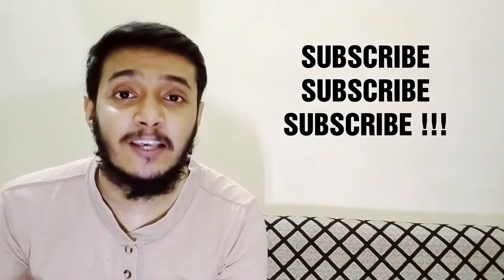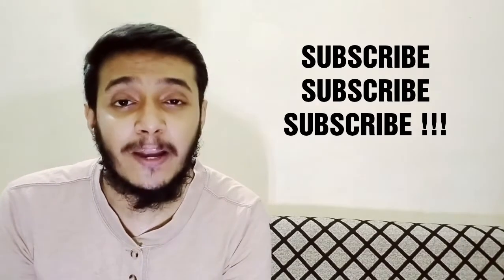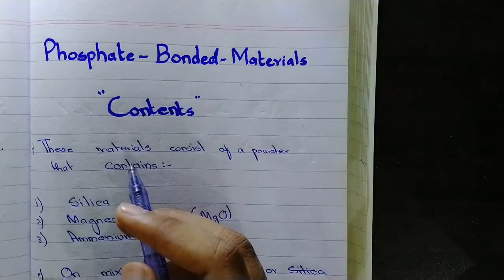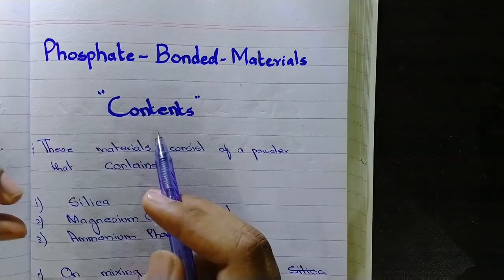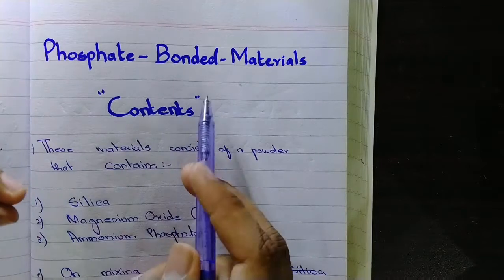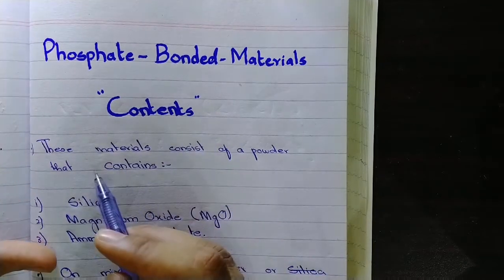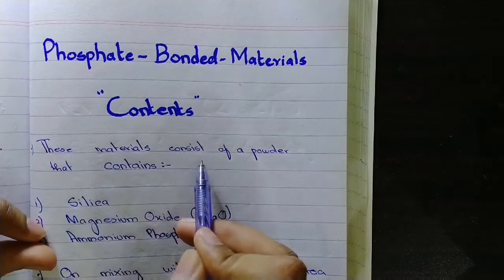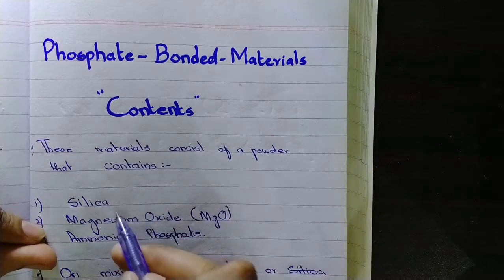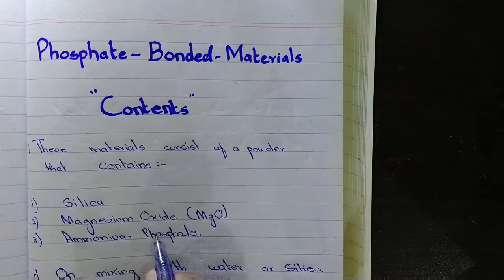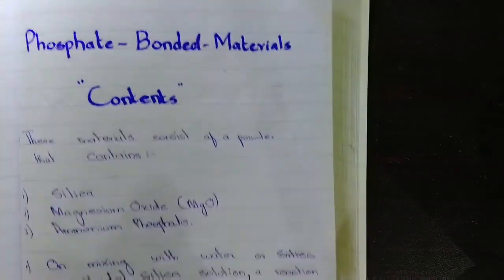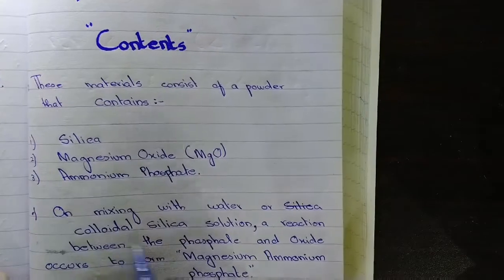Please subscribe to my channel for updates. Phosphate bonded materials consist of a powder containing silica, which is a refractory material, magnesium oxide (MgO), and ammonium phosphate.